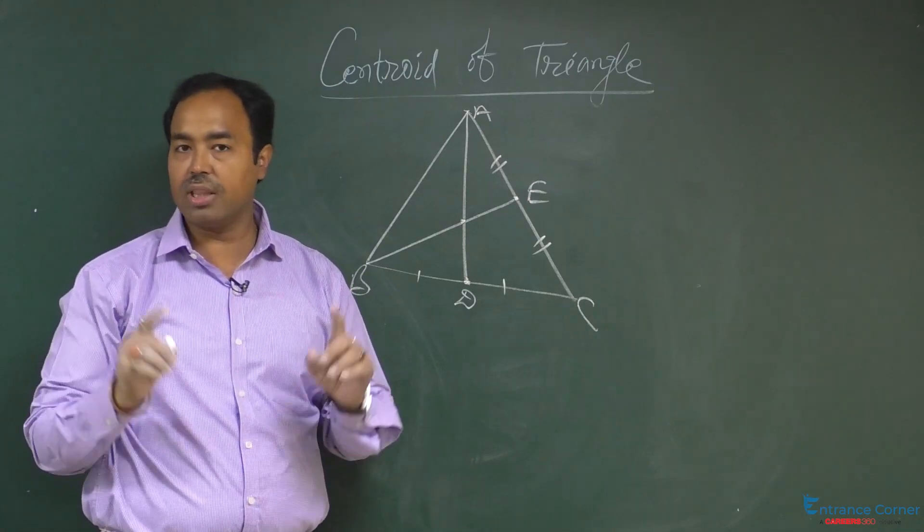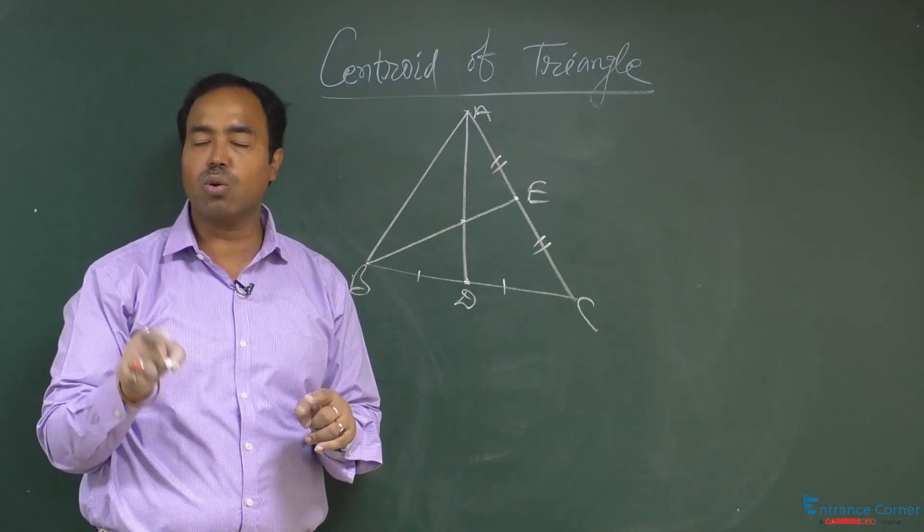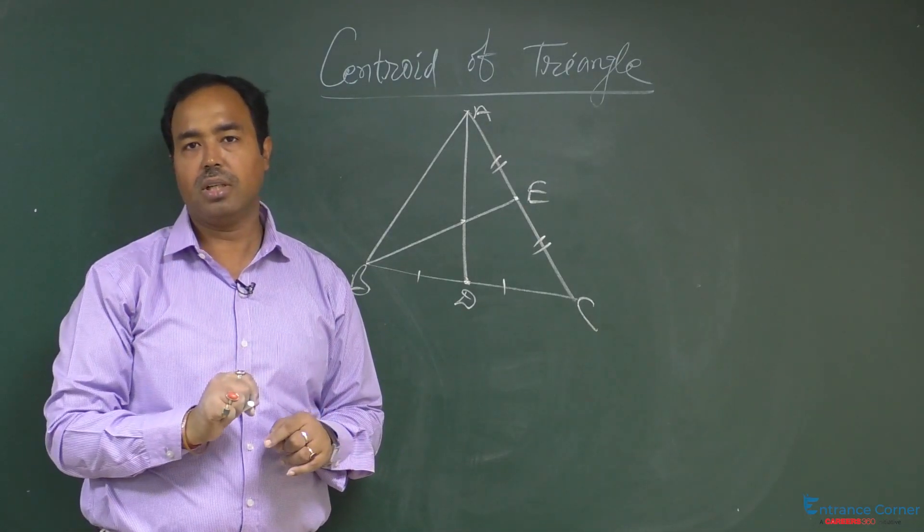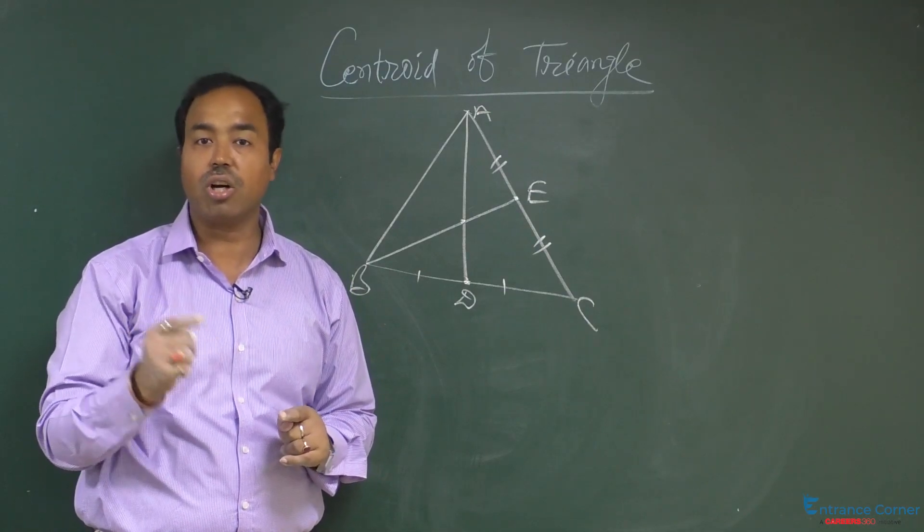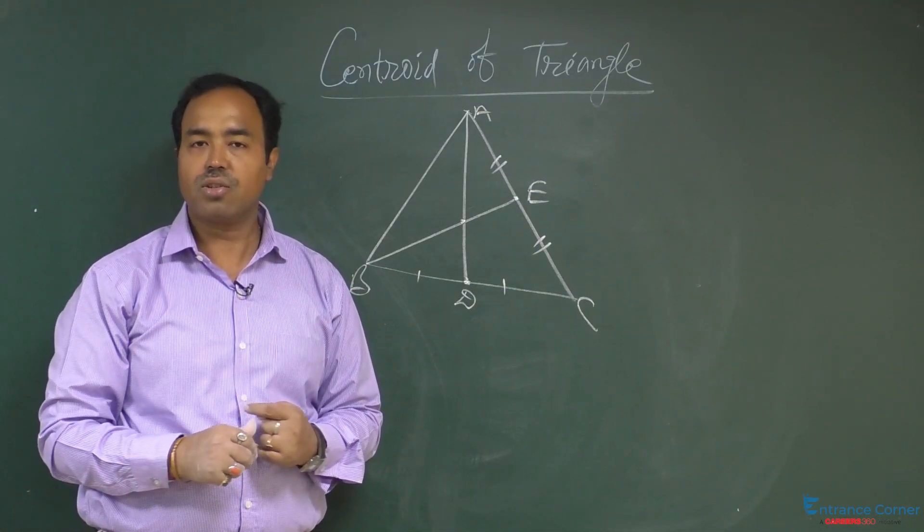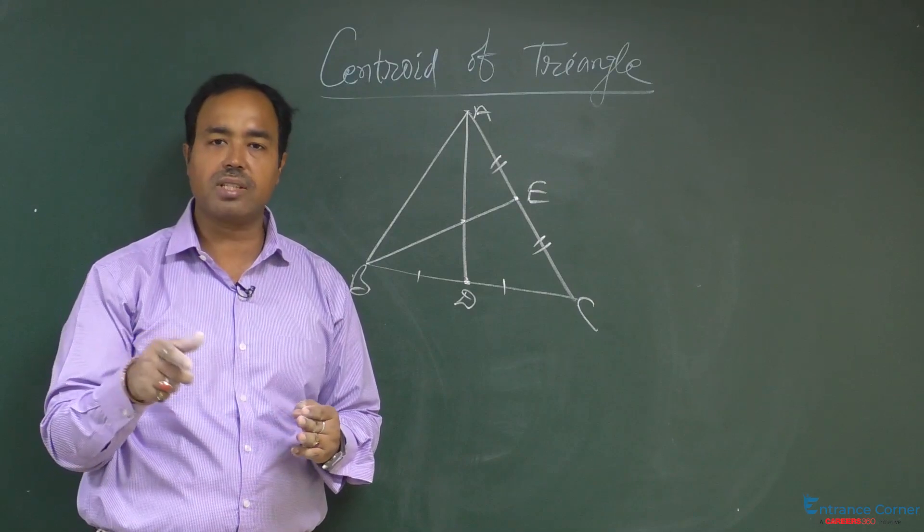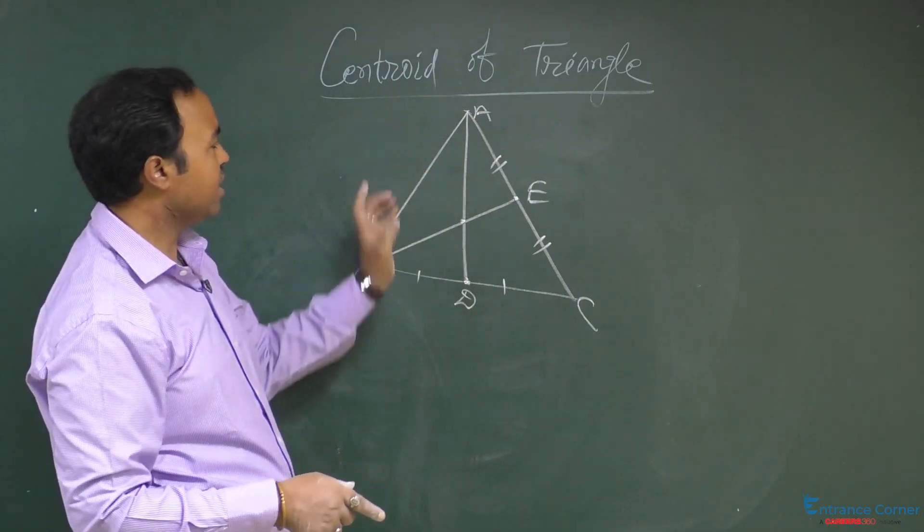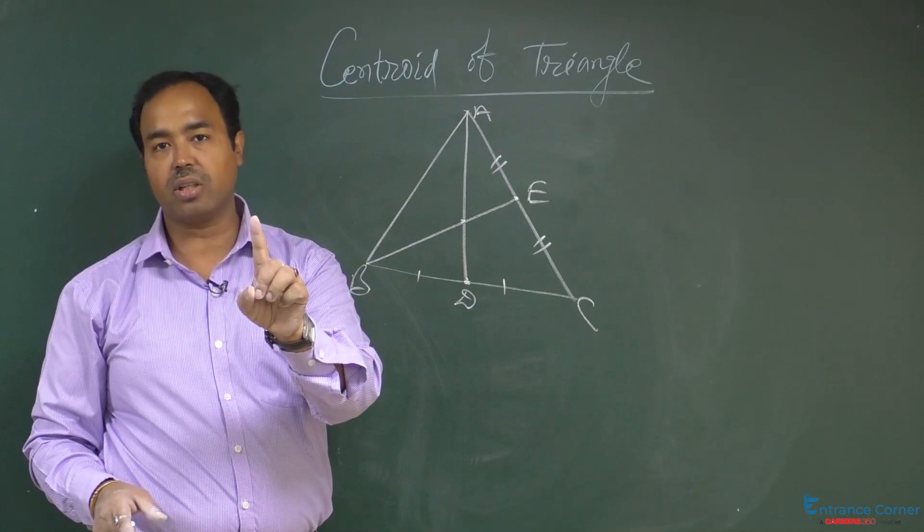And you know that all the three medians passes through the same point, that is all the three medians are concurrent. So, if passes through the same point, it means for a triangle, we have only one centroid.